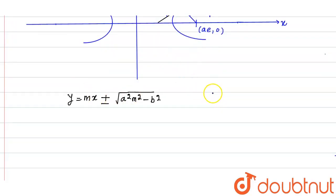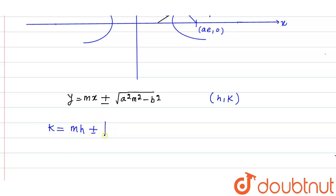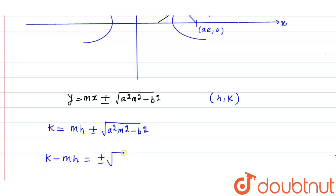This tangent is passing through (h, k), so we can write: k = mh ± √(a²m² - b²). Rearranging: k - mh = ±√(a²m² - b²).